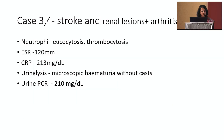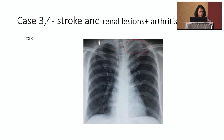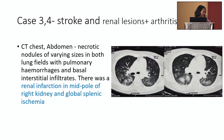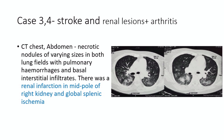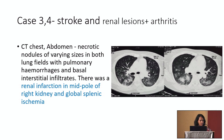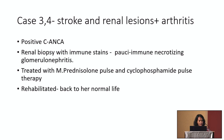Looking at investigations, she had neutrophilic leukocytosis, thrombocytosis, very high inflammatory markers, microscopic hematuria and proteinuria with PCR of 210. Chest X-ray showed an opacity in the left apical area of the lung, and CT chest and abdomen confirmed nodular lung lesions with pulmonary haemorrhages and interstitial infiltrates. Interestingly, she also had a renal infarction in the mid-pole of the right kidney and global splenic ischemia. She had positive ANCA, and renal biopsy showed pauci-immune necrotizing glomerulonephritis. She was treated early with methylprednisolone and pulsed cyclophosphamide and rehabilitated to full recovery.